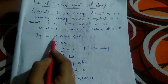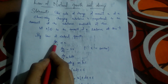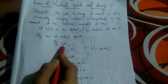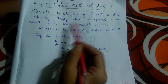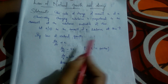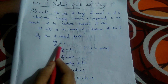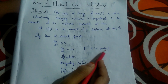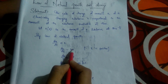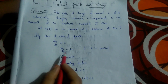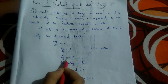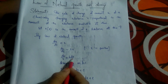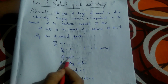Let X(t) be the amount of a substance at time t. By the law of natural growth, we have dx/dt directly proportional to X, where X is the amount of the substance. So dx/dt equals kx, where k is a positive constant. Removing the proportionality and rearranging: dx/x equals k·dt.